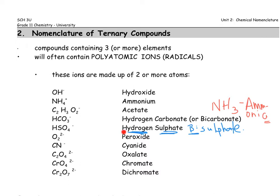Peroxide — the per and then oxide. Cyanide. Oxalate is C2O4, two negative. We're not going to reduce that to lowest terms, because we have two non-metals together, indicating exactly two and exactly four of each of those elements present in that polyatomic ion. Chromate and then dichromate. Again, that is a short list containing some of the most common polyatomic ions we're likely to see.